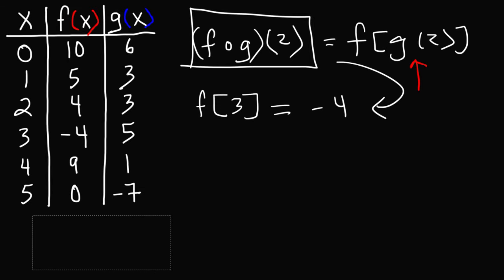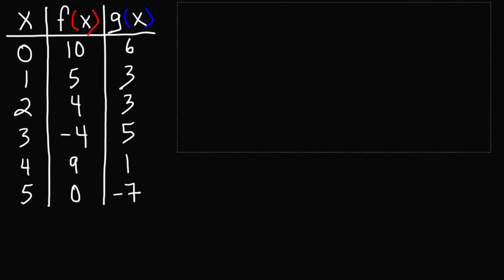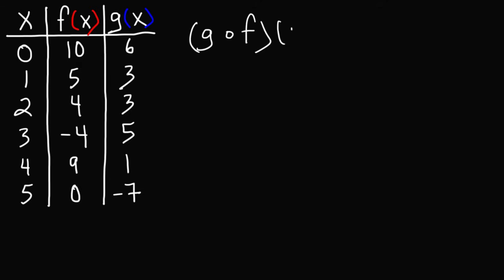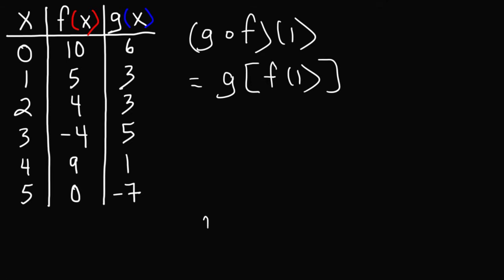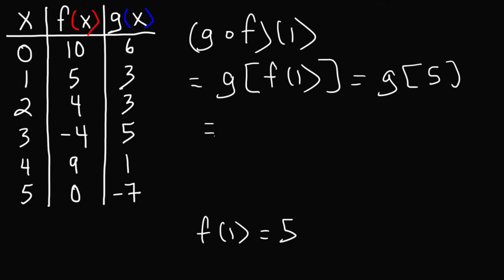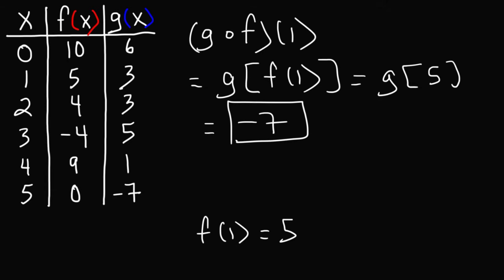Now let's try another example: g of f of 1. The first thing we're going to do is rewrite it — g is on the outside, f is on the inside. So let's evaluate the part on the inside. What is f of 1? When x is equal to 1, f has a value of 5. So we can replace f of 1 with 5, giving us g of 5. When x is 5, we can see that g has a value of negative 7. So g of f of 1 is equal to negative 7.